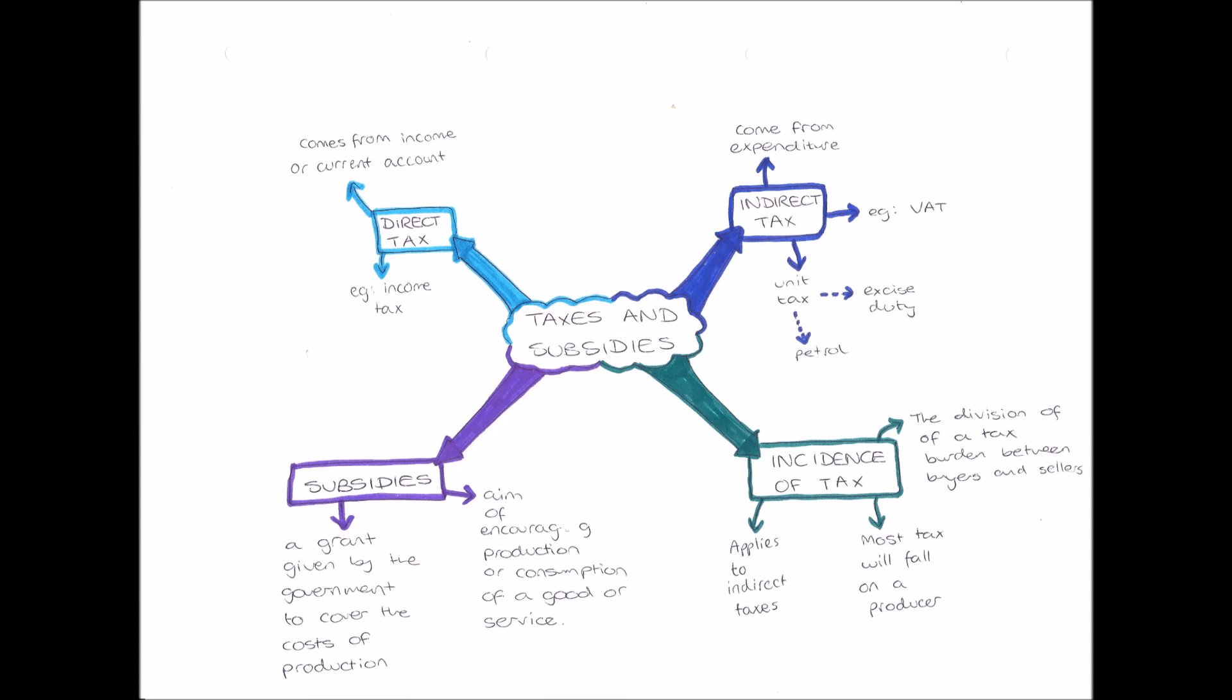Next we have this idea of the incidence of tax. The incidence of tax is the division of a tax burden between buyers and sellers. So who pays the tax - is it the consumer, the person buying the good, or the producer, the person selling the good? And this only applies for indirect taxes.